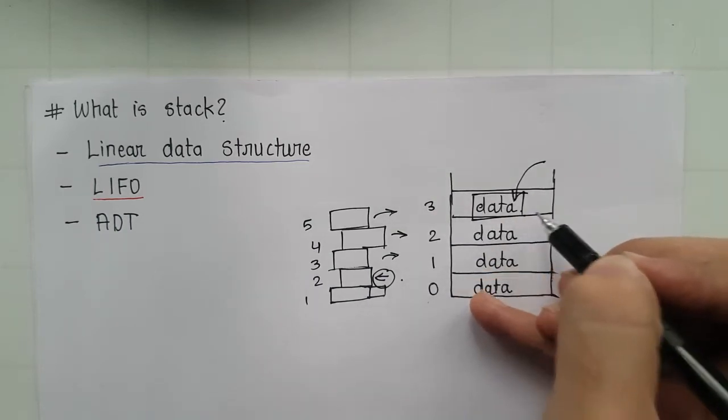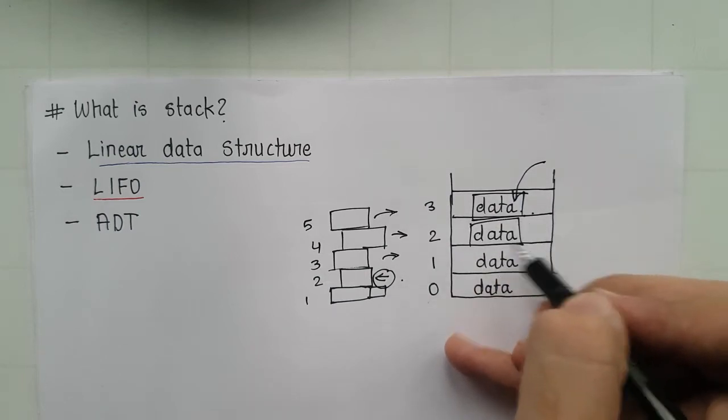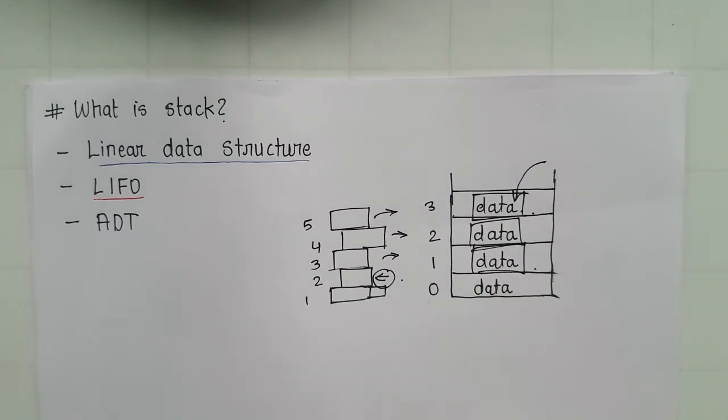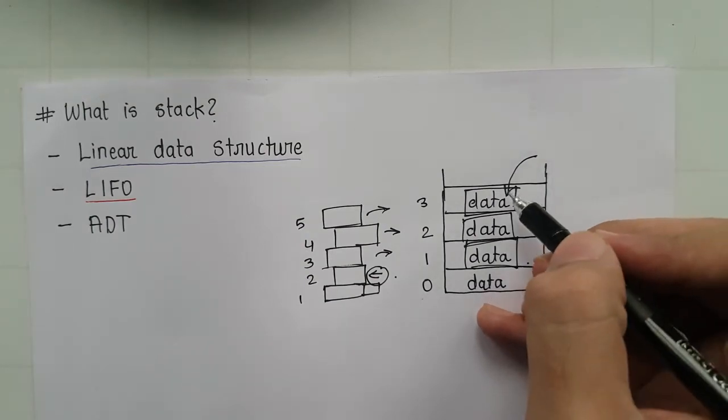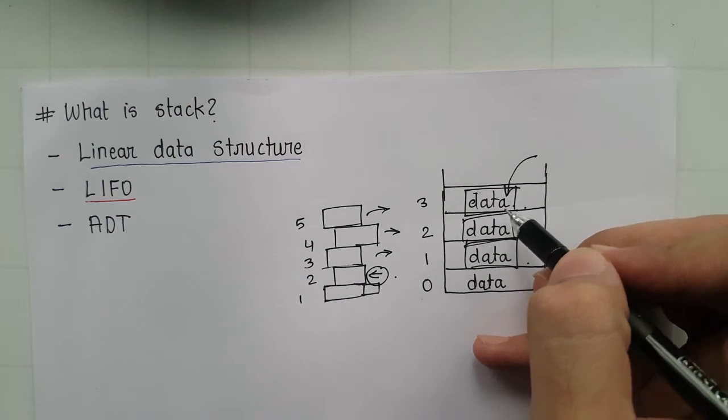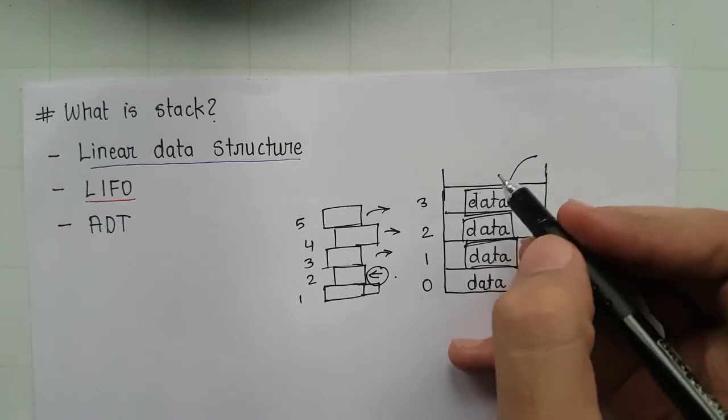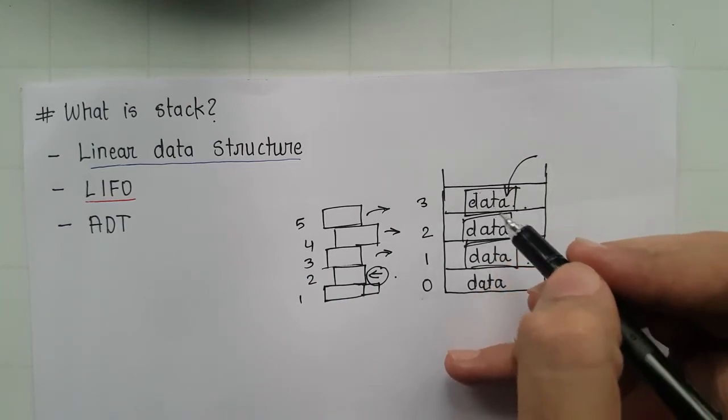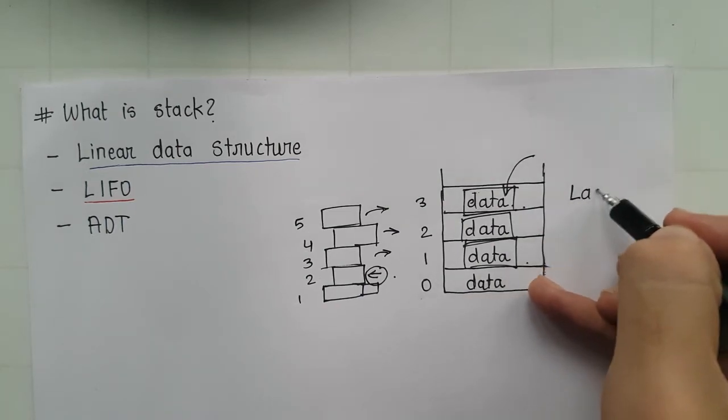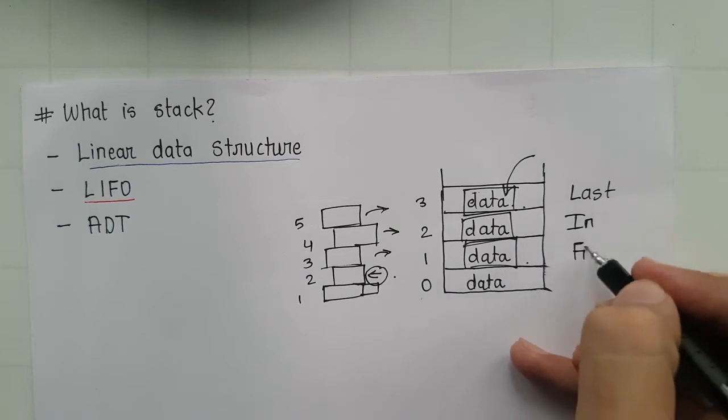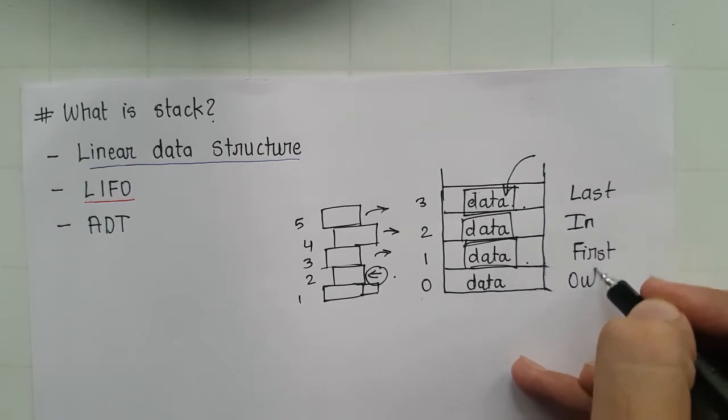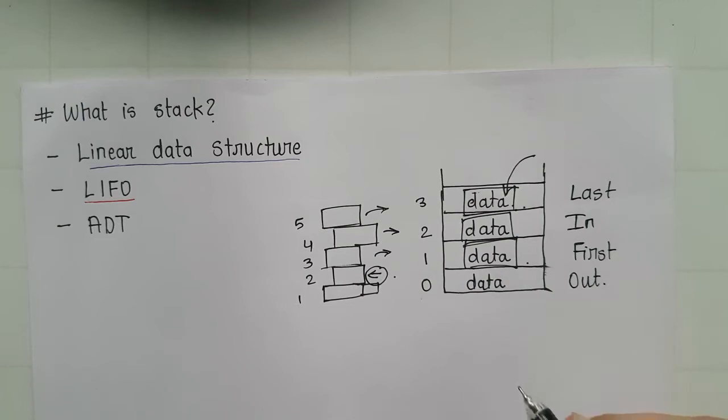Which means that the data which is at the topmost position is deleted first. That is, the data which is lastly added to our stack is deleted first. That is called as the last in first out. So now we'll have a look at ADT. What is ADT?